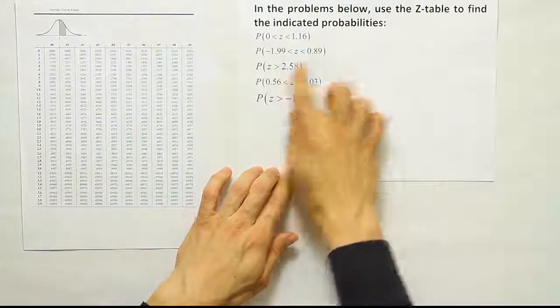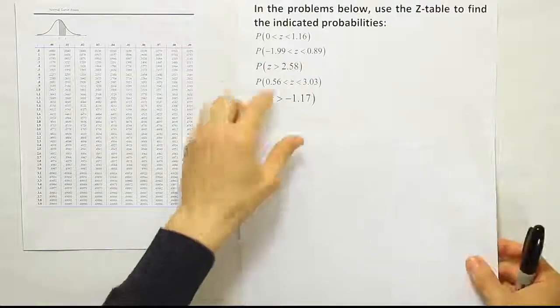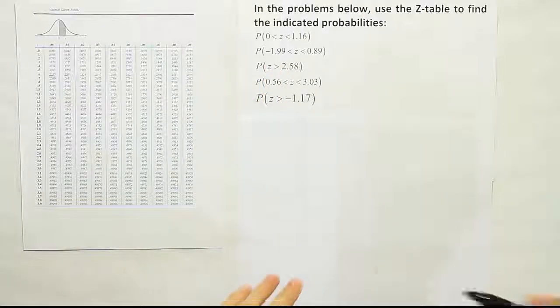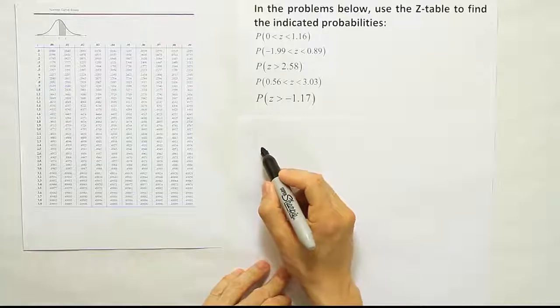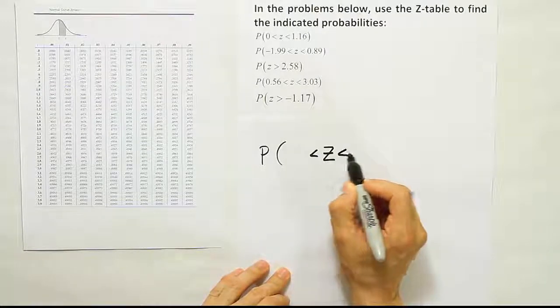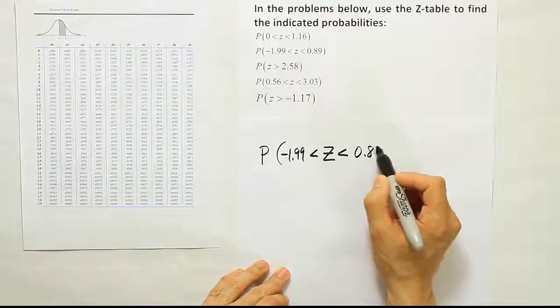Okay, so continuing with this problem, now we're going to do the second statement here. And this second statement says the probability that z is between negative 1.99 and 0.89. So looking for the probability that z is between negative 1.99 and 0.89.